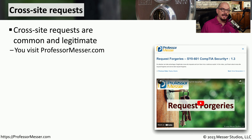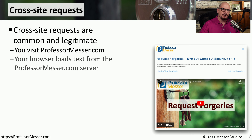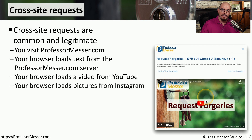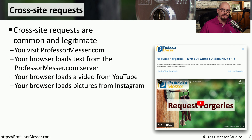Another application attack is the cross-site request attack. Cross-site requests are things that occur normally when you visit a website. For example, if you visit professormesser.com, your browser loads a page with text from the professormesser.com web server. Your browser might also load a video from YouTube, and pictures and other information from Instagram. All of this loads into a single screen, and from the user's perspective it looks like all of this information is coming from one server, when in reality all of this information is being loaded from different servers.